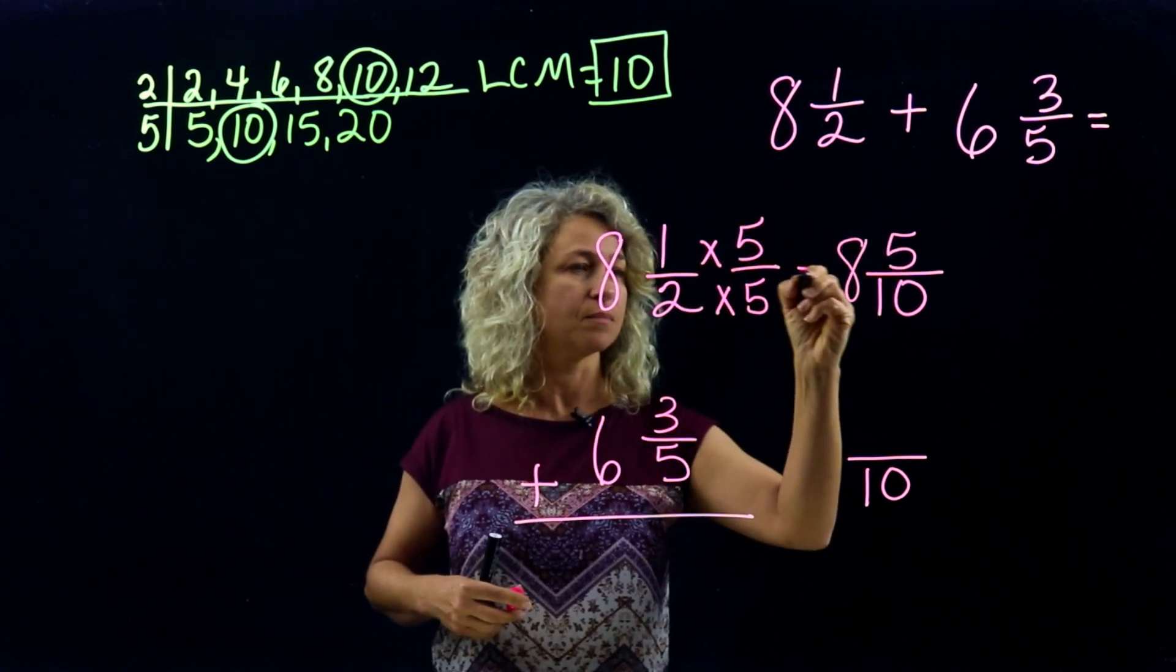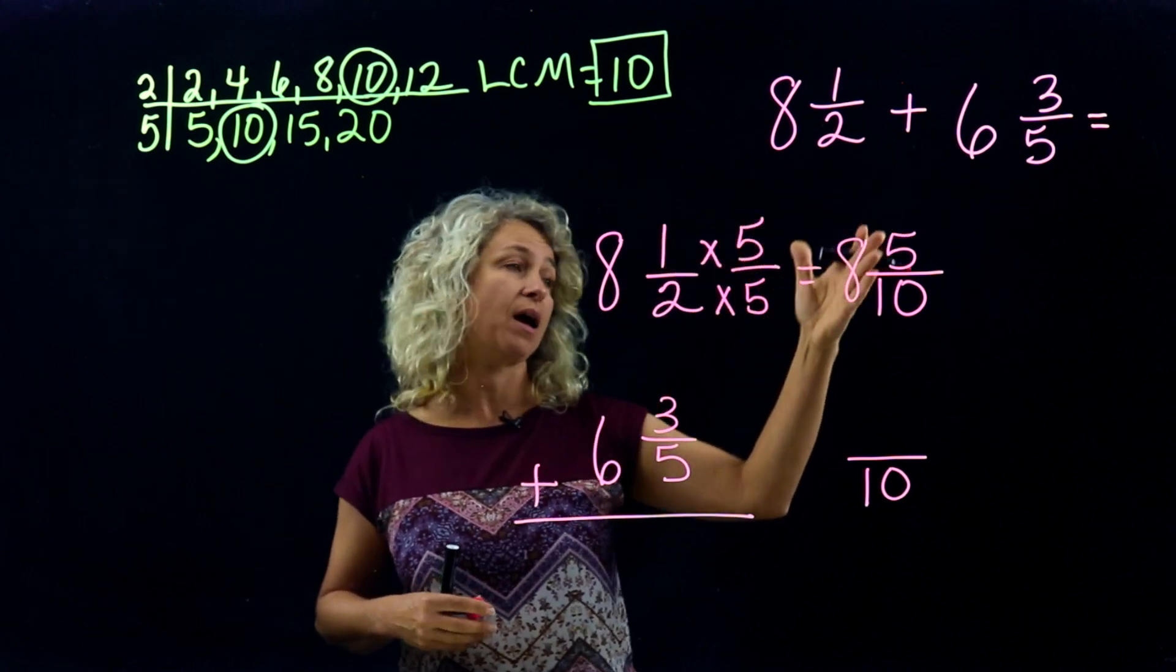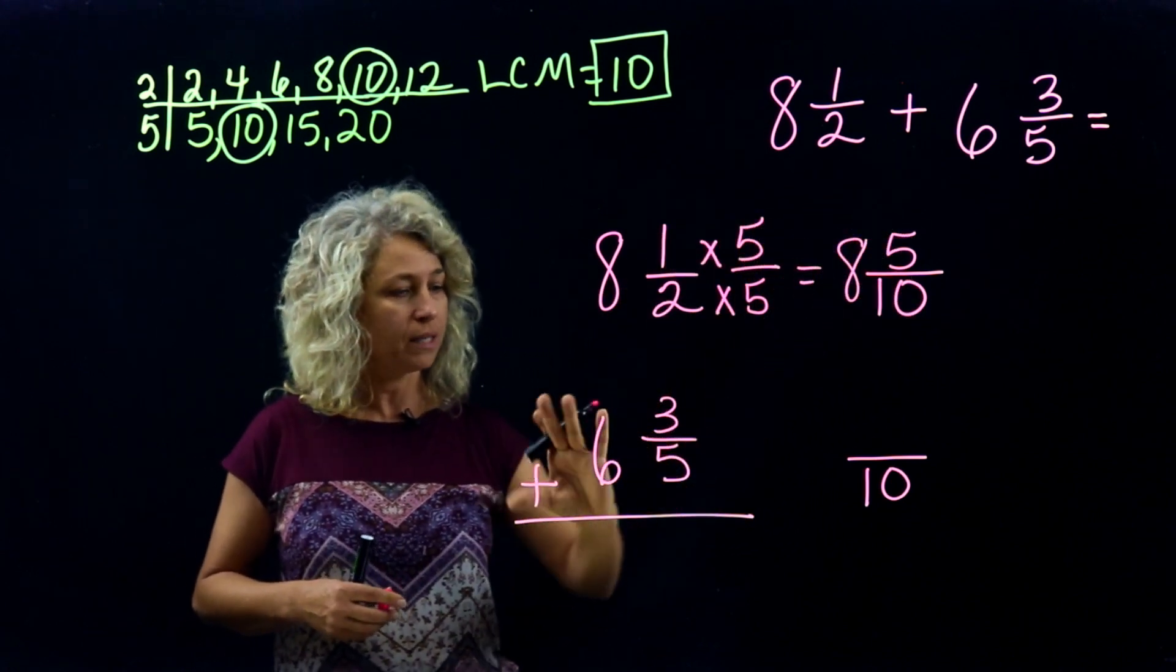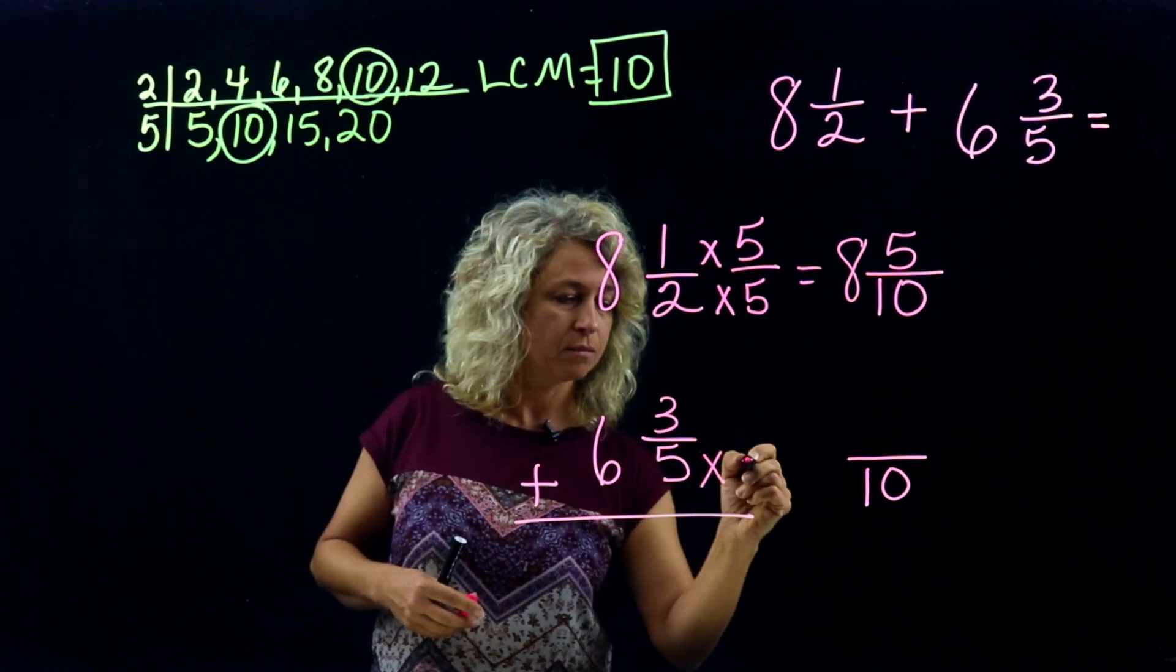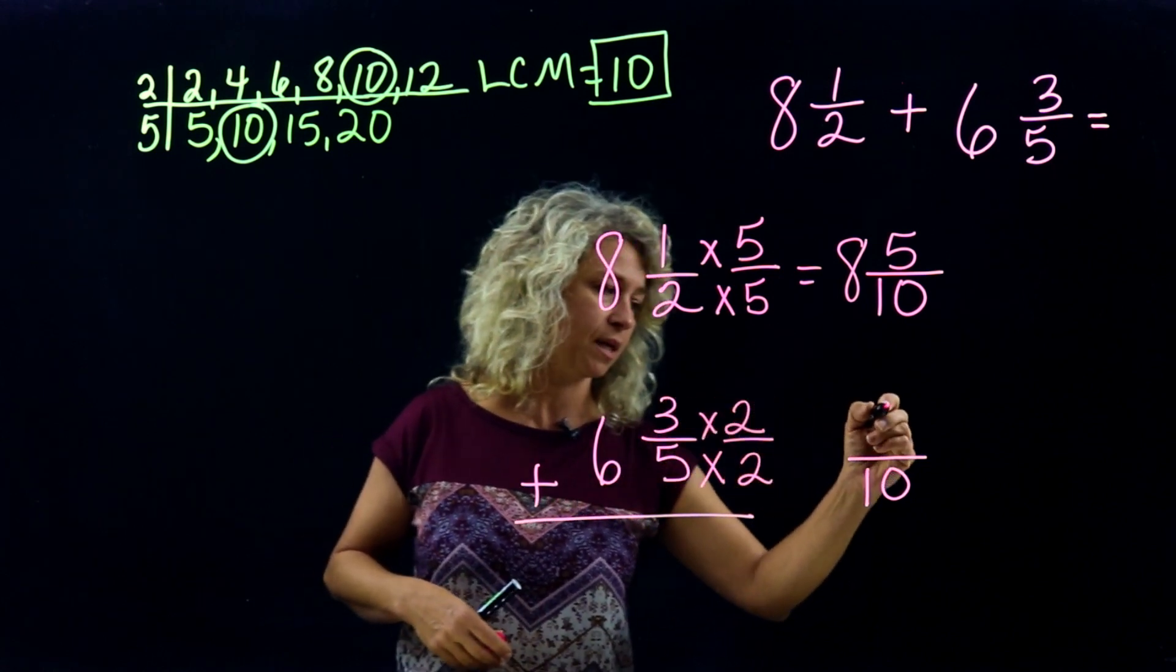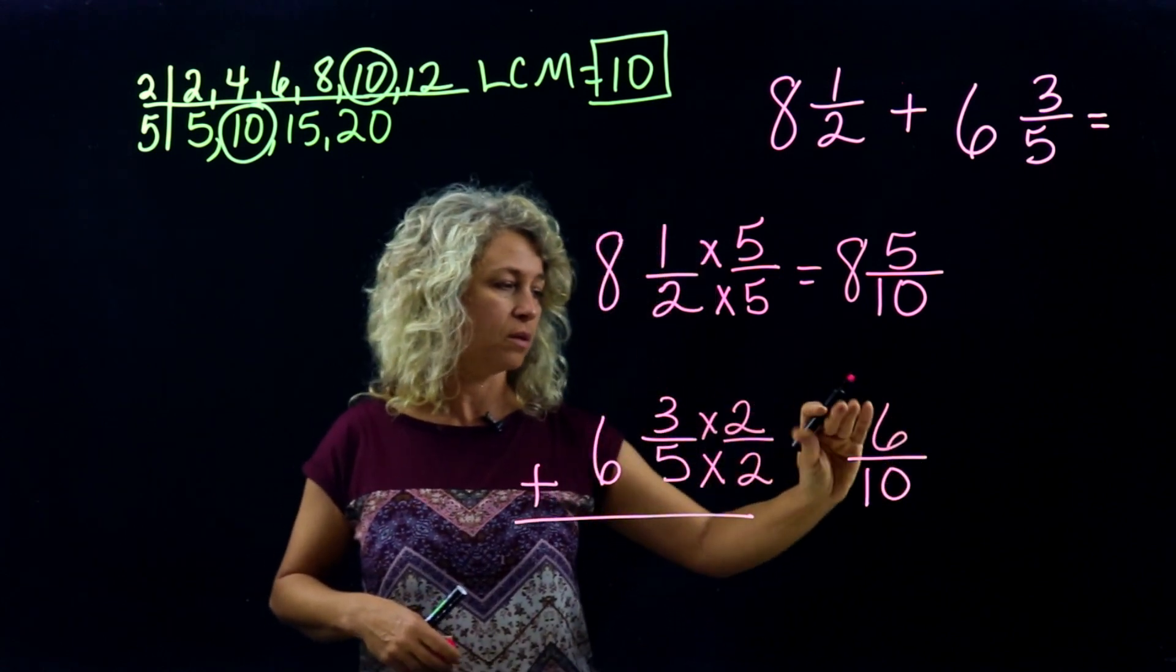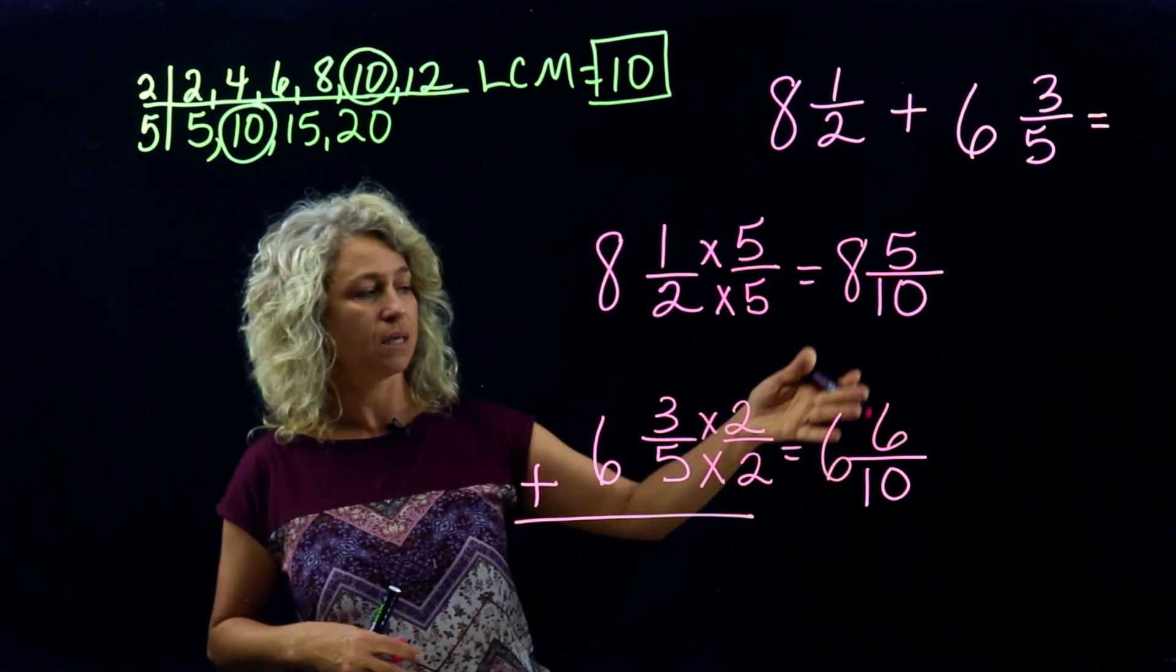Alright, let's do the bottom part. How do you get from a 5 to a 10? Multiply times 2. Do the same at the top. 3 times 2 is 6. And bring over the whole number. So 6 and 3/5 means 6 and 6/10.